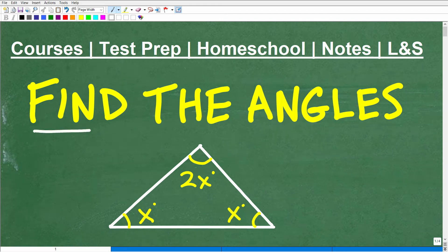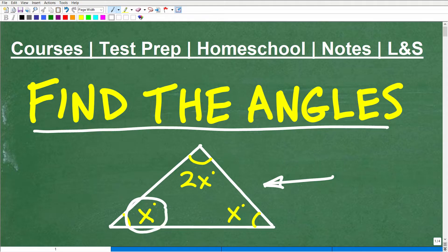Okay, let's go ahead and find the angles of this triangle. You can see here we have a triangle and the angles inside this triangle are x degrees. We have another x degrees and this is 2x degrees. What we want to do is find the actual angles of this triangle.